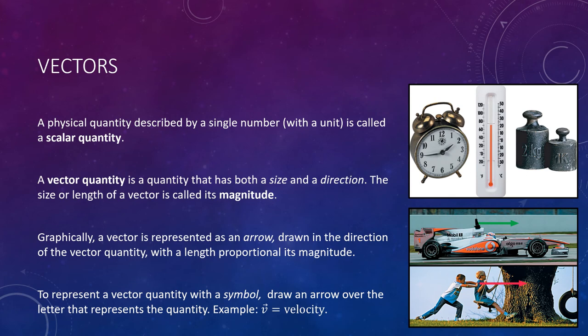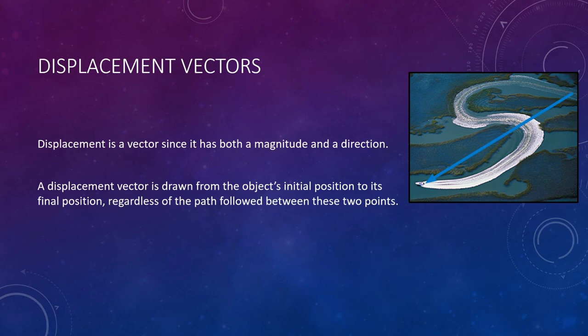When we want to represent a vector quantity with a symbol, we need to somehow indicate the symbol is for a vector and not just a scalar. Anytime we're indicating a vector quantity, we do so by writing a little arrow above the symbol. For example, velocity is a vector because we said previously that it included not only the speed but the direction. It's a vector quantity, so we're going to label it with an arrow above the V. Displacement is also a vector, since it has both a magnitude, in other words how far you've traveled, the distance traveled, and the direction.